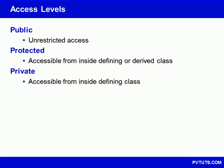Every class member has an accessibility level that determines where the member will be visible. There are three of them available in C++: Public, Protected, and Private.